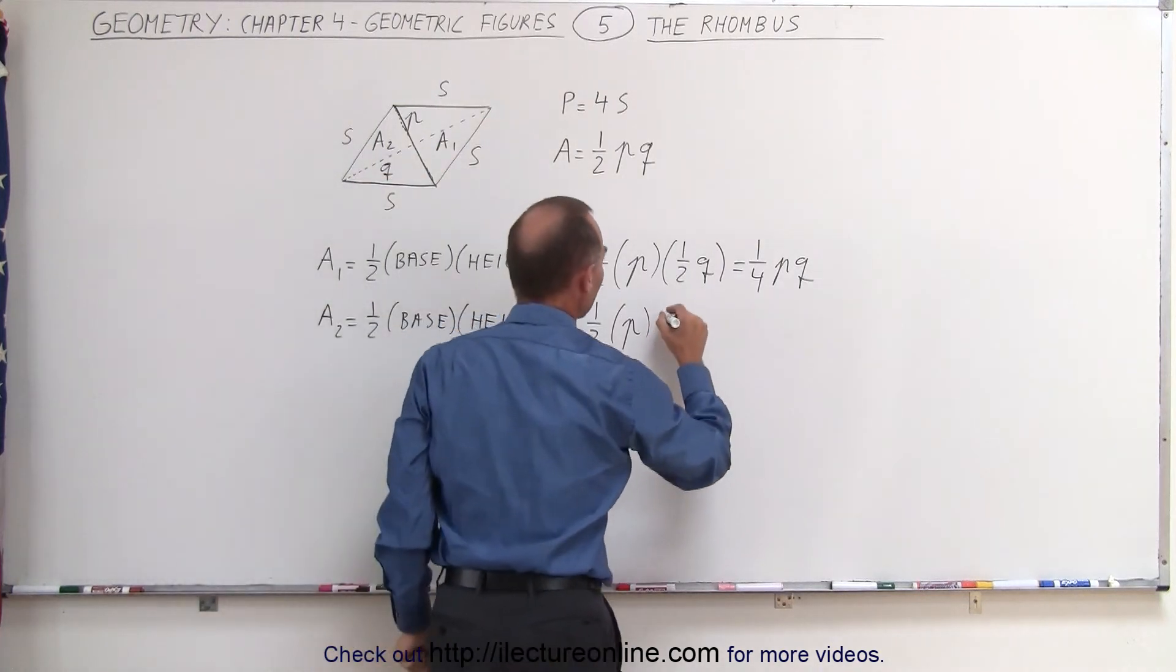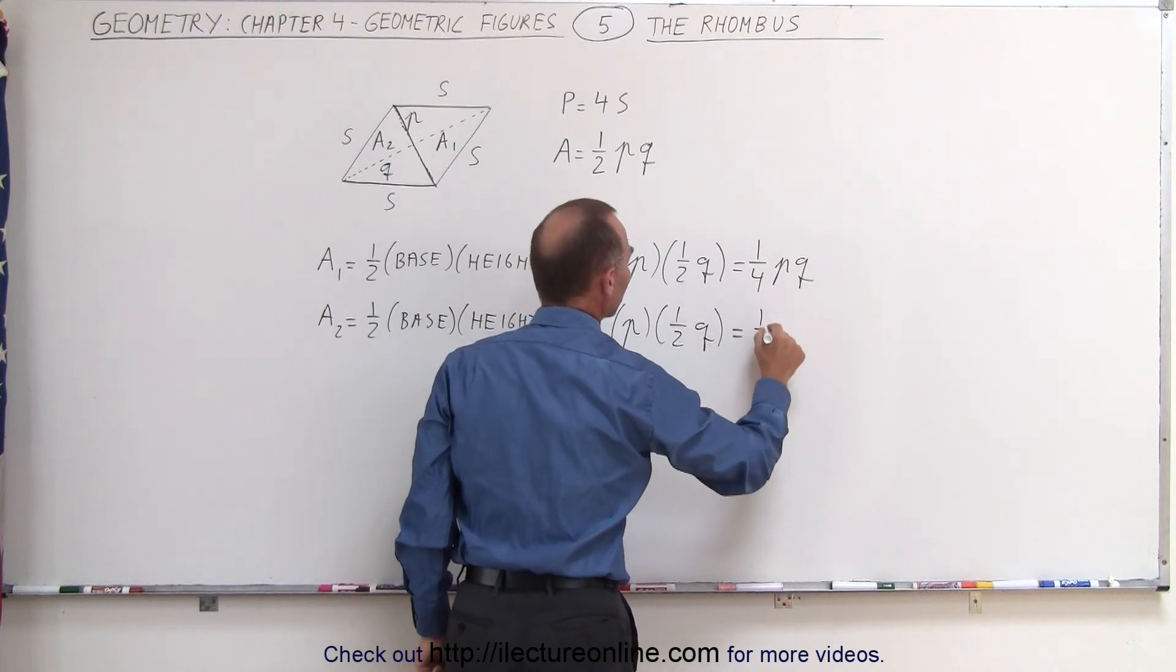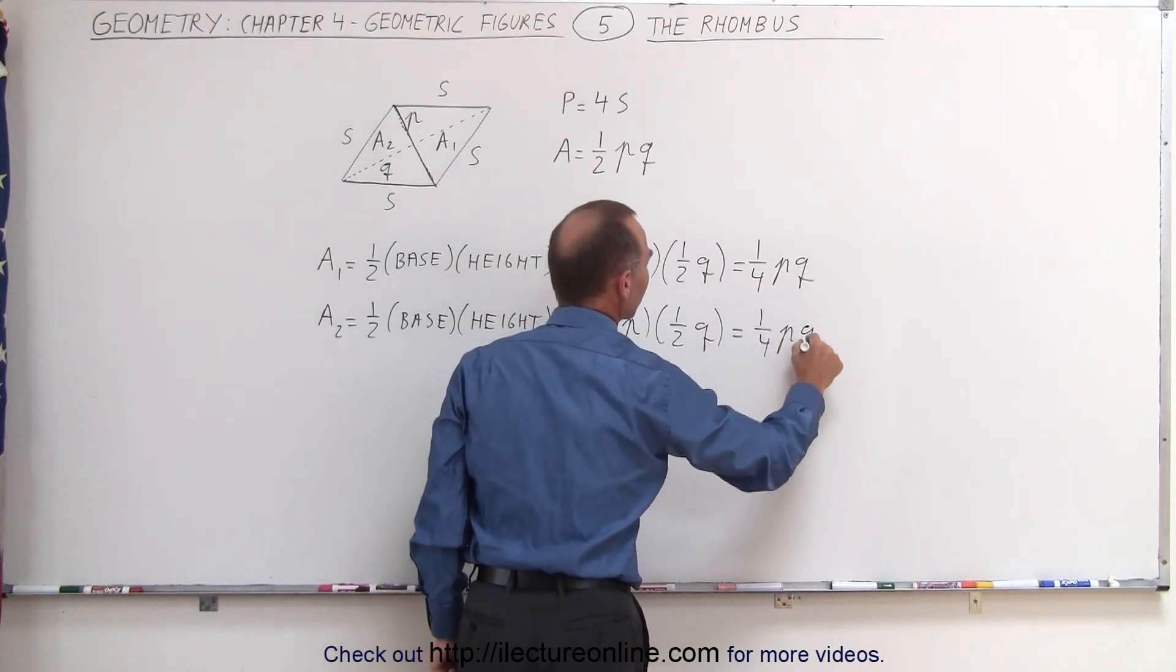and the height of that triangle will also be half Q. It'd be the other half of the diagonal Q. So that would be one-half Q. And so we get one-quarter P times Q.